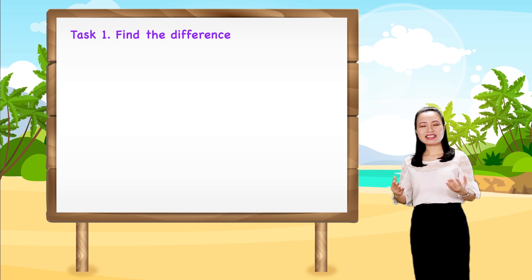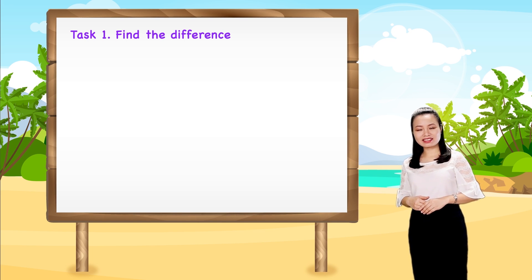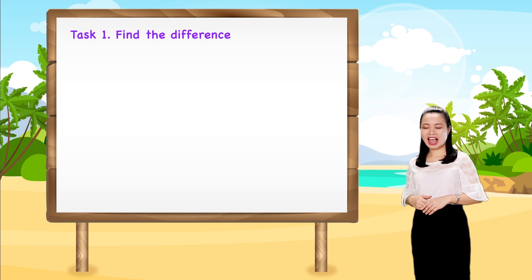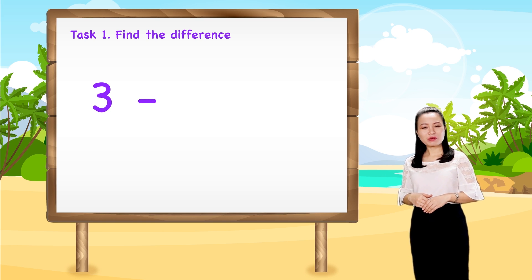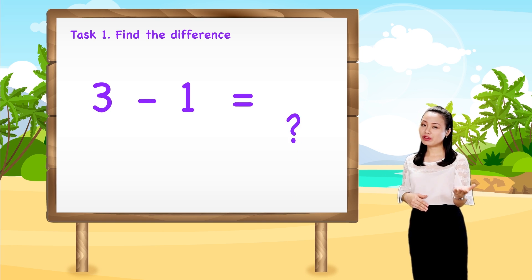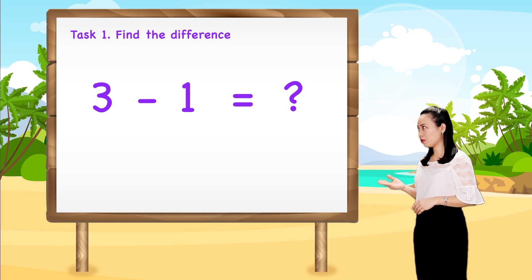Now, let's find the answers together. First, 3 minus 1. We draw 3 marbles, cross out 1, and count what's left to find that 3 minus 1 equals 2.